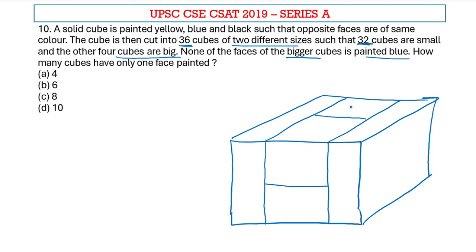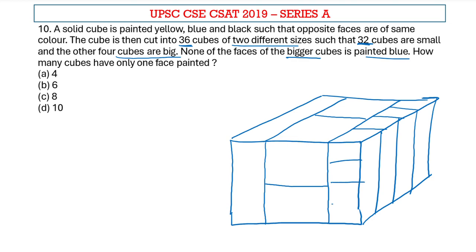This is how the cube is cut for the big portion. These four cubes will be the big portion, and the remaining portion should be cut into 32 cubes — 16 here and 16 on this side, arranged as 1, 2, and 3, repeated on this side as well.